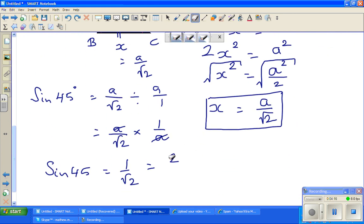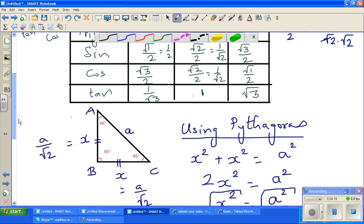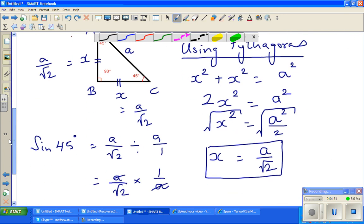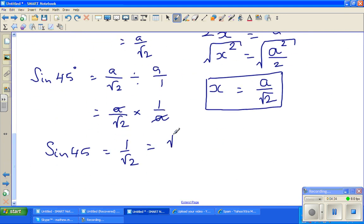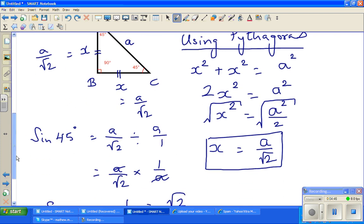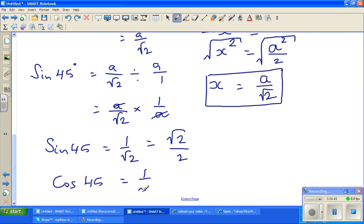1 over root 2 is a bit difficult to remember like this, but if you go from the table - root 3 over 2, root 2 over 2, root 1 over 2. Same way, cos 45 would be the same, because for 45 degrees, adjacent and opposite are the same. So sine 45 and cos 45 are both 1 over root 2, which is root 2 over 2.